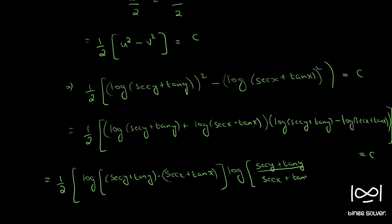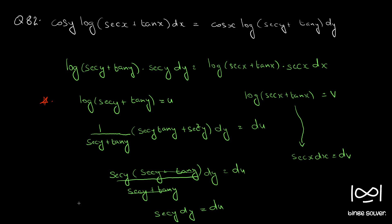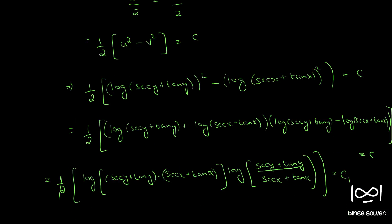Here the 1/2 factor means we take 2c as another constant, which we write as c₁ or c dash — it does not matter. So this is the final answer to question 82. The key step that may get people stuck is the substitution. If you miss out this step, the whole integration becomes very difficult. Once you do the substitution, the whole question becomes very easy.